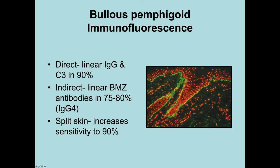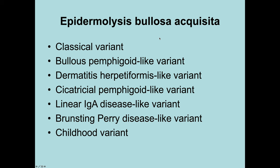Epidermolysis bullosa acquisita — when originally described, it was thought to be a mechanobullous dermatosis in which patients were susceptible to minor trauma, developing blisters around acral sites, particularly the backs of hands and fingers. Subsequently it was shown that most patients have antibodies to type 7 collagen. EBA can in fact mimic bullous pemphigoid.